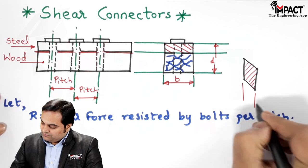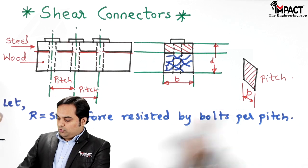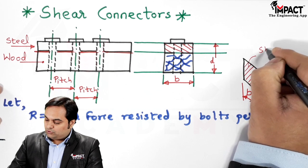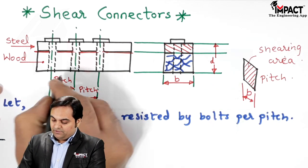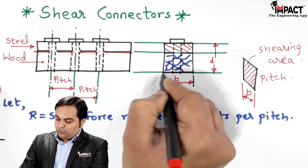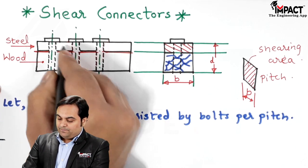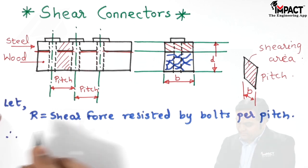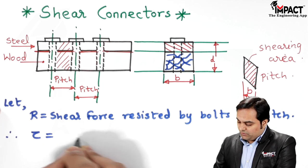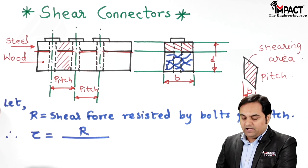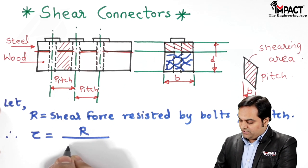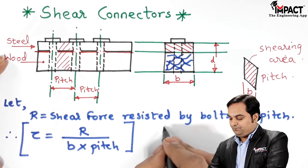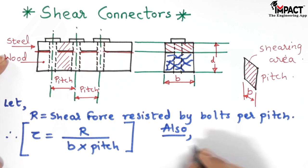Here we have the width of the section and the pitch, so the shearing action takes place over the shearing area equal to width times pitch. Therefore, the shear stress tau acting on the bolts at the junction is equal to the shear force R divided by the shearing area, which is B times pitch.